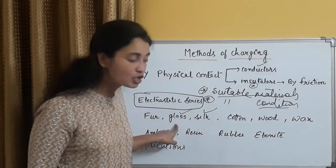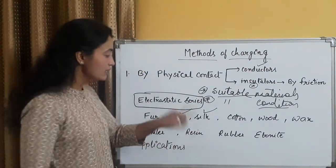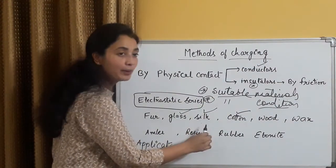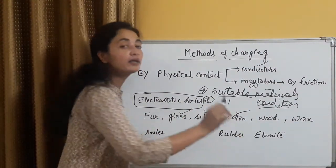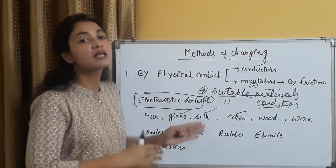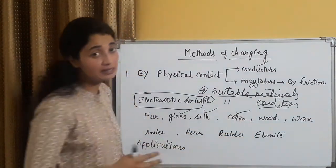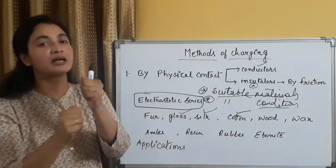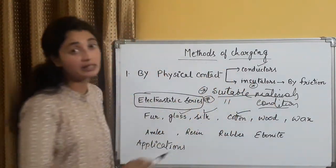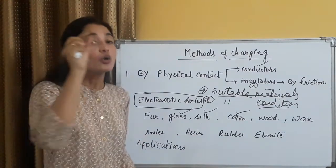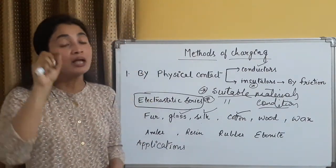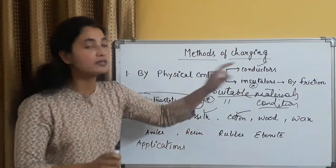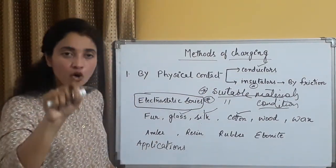So the first coming, the one coming earlier in the series, will be positively charged, and the one coming later in the series, will be negatively charged. Jo series mein pehle aayega, wo positively charged hoga, iska matlab wo electrons loose karega, aur jo series mein following hoga, wo gain karega, ya electrons ko receive karega. To agar humne glass aur silk ka example liya hai, dono ko rub kiya hai, then glass pehle aa raha hai, isliye it will be positively charged, silk will be negatively charged. Suppose I take silk and cotton, I take these two examples, then obviously, silk will be positively charged, cotton will be negatively charged, the one coming earlier in the series will be positively charged.